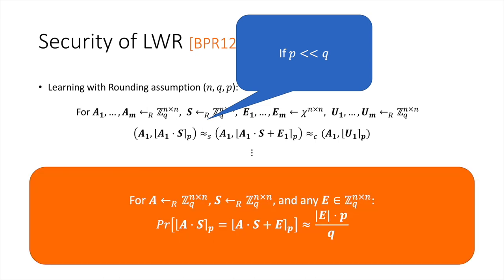More precisely, for uniformly random matrices A and S, the probability that the rounding of A times S equals the rounding of the noisy product A·S + E is roughly P over Q multiplied by the size of the noise E. This means that even if we set the noise and P to be very small, Q must be super-polynomially larger for this equality to hold with overwhelming probability.